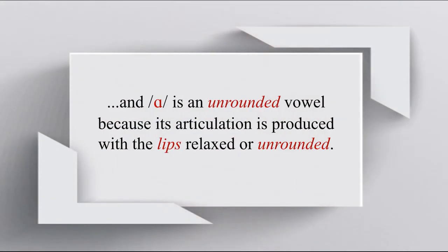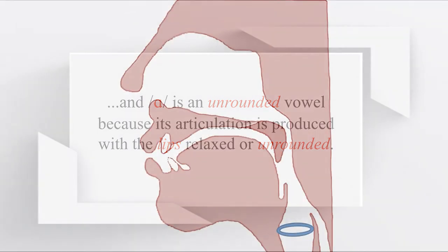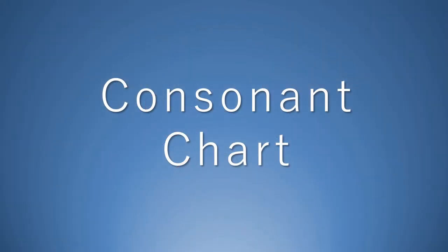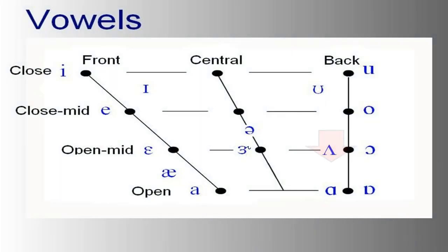And AH is an unrounded vowel because its articulation is produced with the lips relaxed or unrounded. AH: open, back, and unrounded.